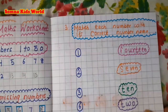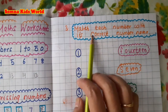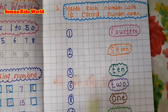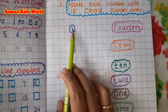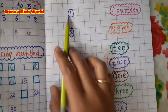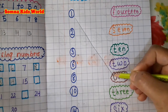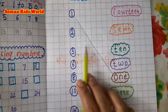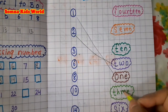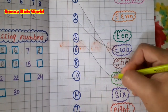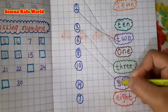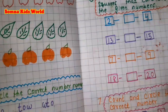Next is: match each number with its correct number name. On one side I have given numbers, and on the other side number names. Kids have to match them — number 1 matches with 'one', number 2 matches with 'two' (T-W-O), number 3 matches with 'three', number 6 matches with 'six' (S-I-X), like this.